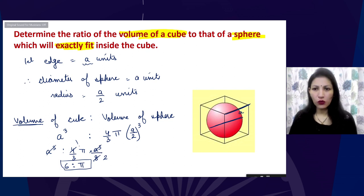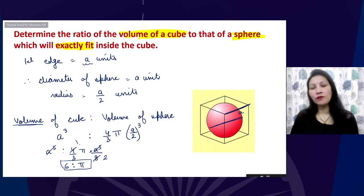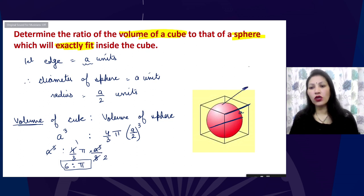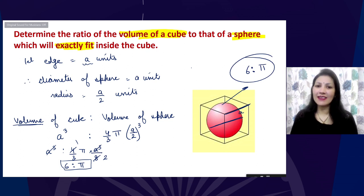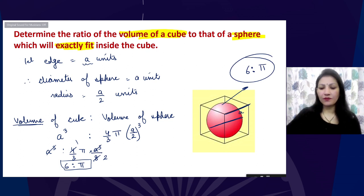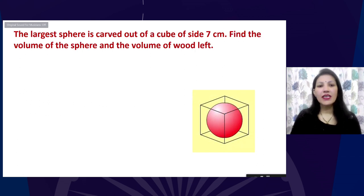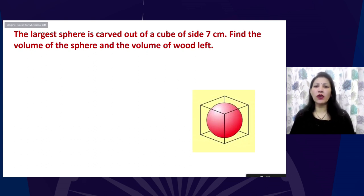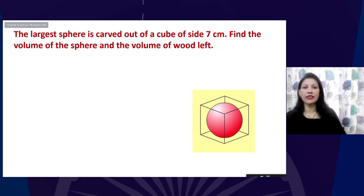So the ratio of the volume of the cube to the volume of the sphere that fits exactly inside it is 6 : π. Similarly, let us discuss the next question which uses the same figure but asks something different.